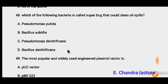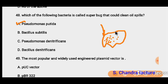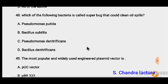Question 48: Which bacteria is called a superbug that can clean oil spills? If there is an oil spill in the ocean, the biodiversity there can be destroyed. Scientists use Pseudomonas putida, which is an oil-feeding bacterium. It grows and feeds on oil as long as oil is present. Once the oil is finished, the bacteria die. So the correct option is Pseudomonas putida.